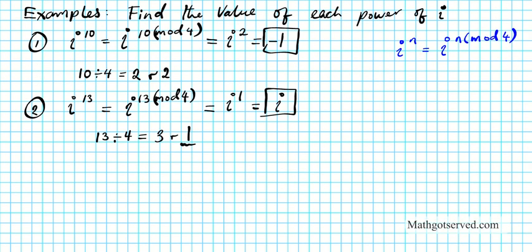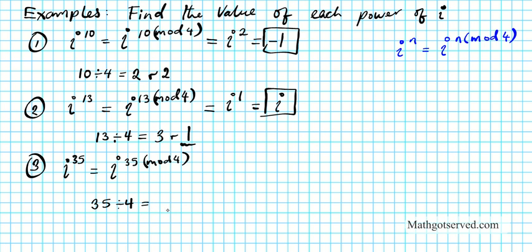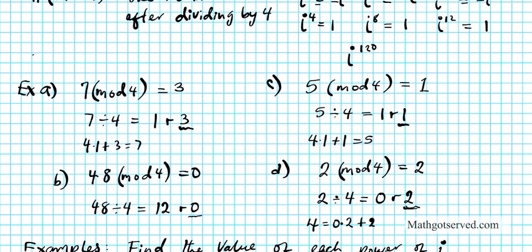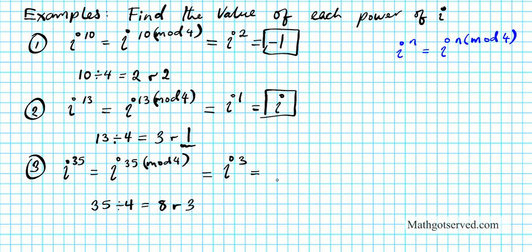Example 3: What is i to the 35th power? Using the formula, i to the 35th equals i to the (35 mod 4). What is 35 modulo 4? It is the remainder after 35 is divided by 4. 4 goes into 35 eight times, which is 32. 32 needs 3 more to get to 35, so the remainder is 3. Therefore 35 modulo 4 is 3, and i to the 35th equals i to the 3rd power. From our chart, i to the 3rd is negative i. So the answer is negative i.